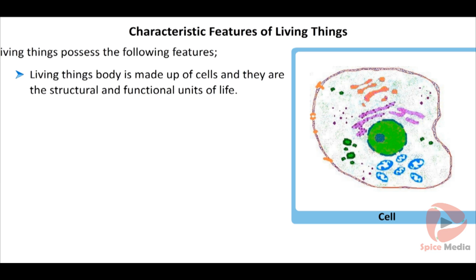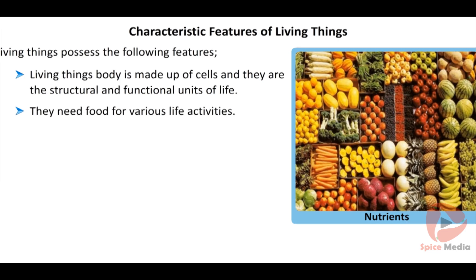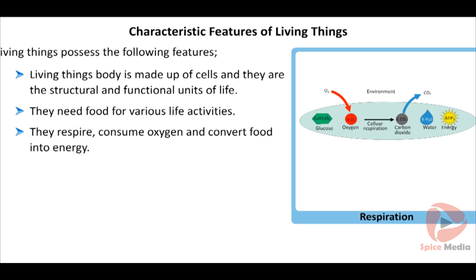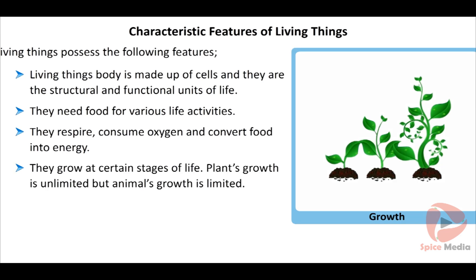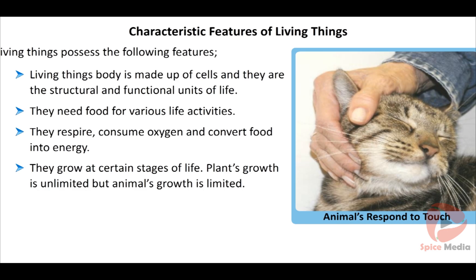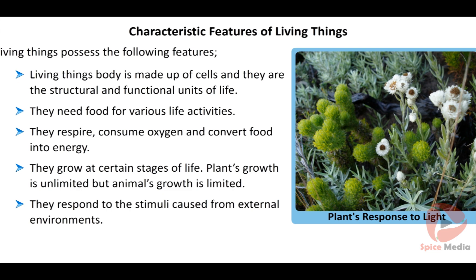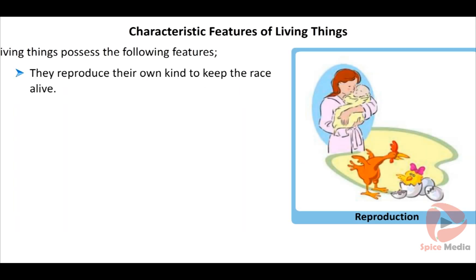Living things possess the following features: their body is made up of cells, which are structural and functional units of life. They need food for various life activities. They respire, consume oxygen and convert food into energy. They grow at certain stages of life. Plants' growth is unlimited but animals' growth is limited.